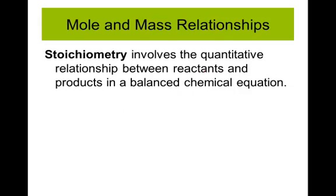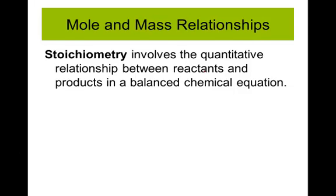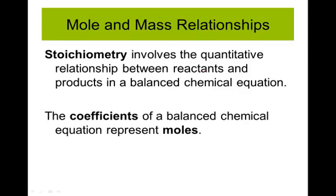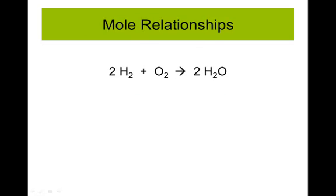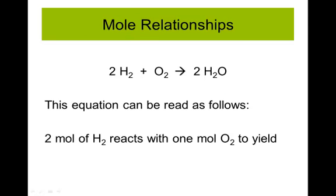Now when we talk about stoichiometry, it's a way we can go between reactants and products in a balanced chemical equation and figure out those relationships. In a balanced chemical equation, the coefficients in front balance the equation and represent moles. So for this equation, two moles of hydrogen react with one mole of oxygen to yield two moles of water — just by looking at the coefficients out front.